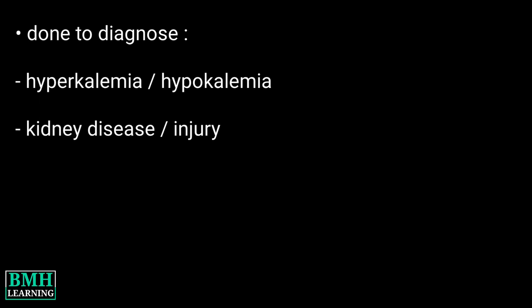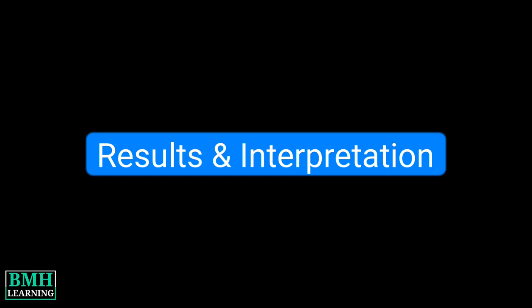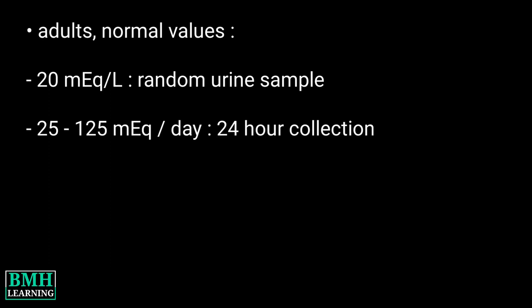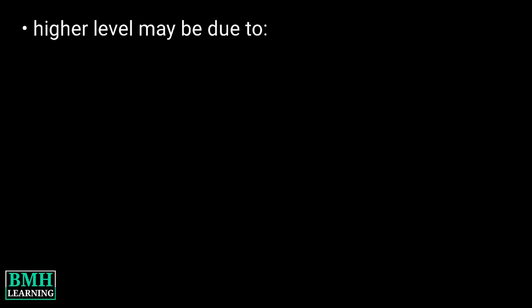It's also used to diagnose injury and adrenal gland problems. Results and interpretation: Normal ranges for adults are generally 20 mEq per liter in a random urine sample and 25 to 125 mEq per day in a 24-hour collection. Higher levels may be due to several conditions.